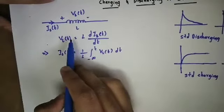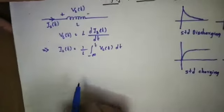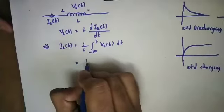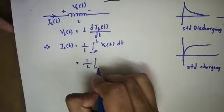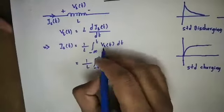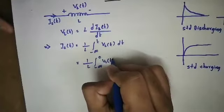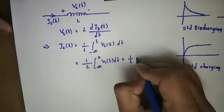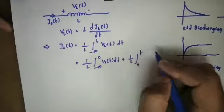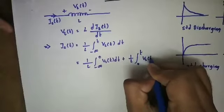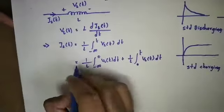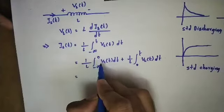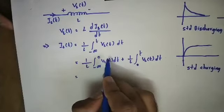This is inductor Ohm's law. This is two forms of Ohm's law. The current IL is equal to 1 by L, integral from minus infinity to T of VL(t) dt. This can be split: only the interval from minus infinity to 0 equals the past initial condition.